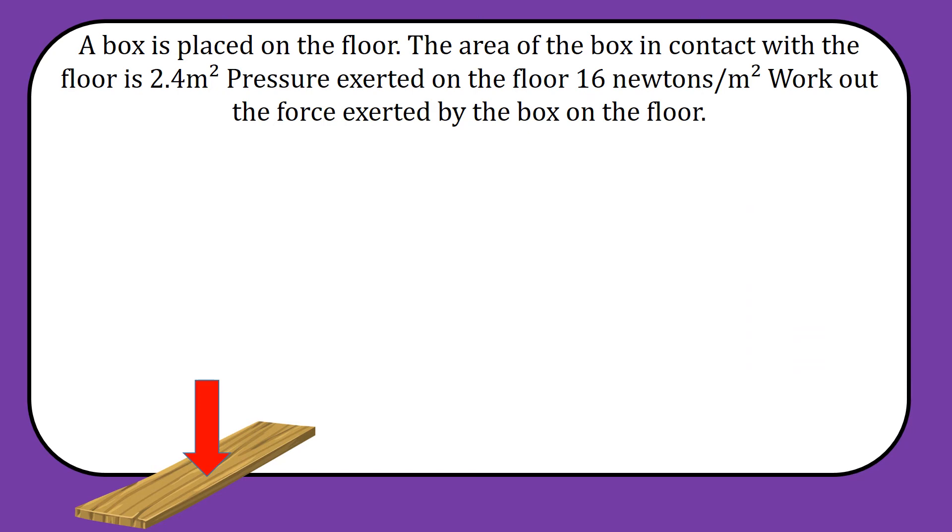Final one. A box is placed on the floor. The area of the box in contact with the floor is 2.4 metres squared. Pressure exerted on the floor is 16 newtons per metre squared. Work out the force exerted by the box on the floor.